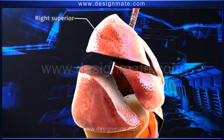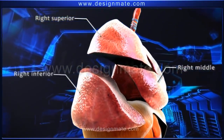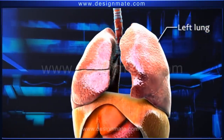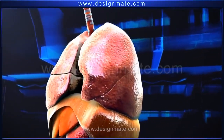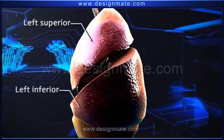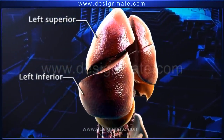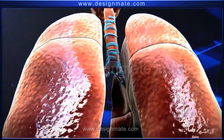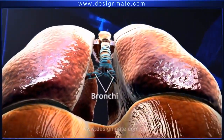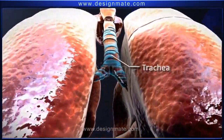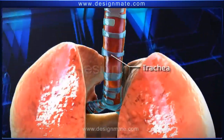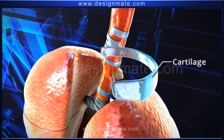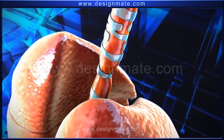The right lung is divided into three lobes: the right superior, right middle, and the right inferior lobe. The left lung is smaller and has only two lobes: the left superior and the left inferior lobe. Both lungs are associated externally with small tubular bronchi, which unite and extend into the trachea.